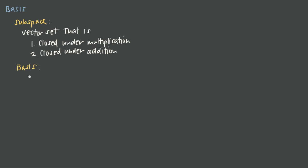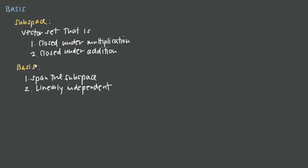Now we want to say that every subspace needs a basis, or we want to be able to come up with a basis for every subspace. A basis has two conditions: first, the basis has to span the subspace; and second, the vectors that form the basis have to be linearly independent. Think about the basis of a subspace as the foundation or the definition of that subspace at its core.